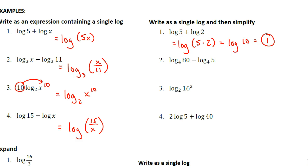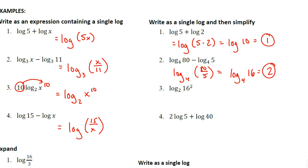For log base 4 of 80 minus log base 4 of 5, we use the quotient rule and set this up as log base 4 of the quantity 80 divided by 5, which gives us log base 4 of 16. I'm trying to figure out what exponent I would apply to 4 to get 16. That exponent would be 2, so our answer is 2.